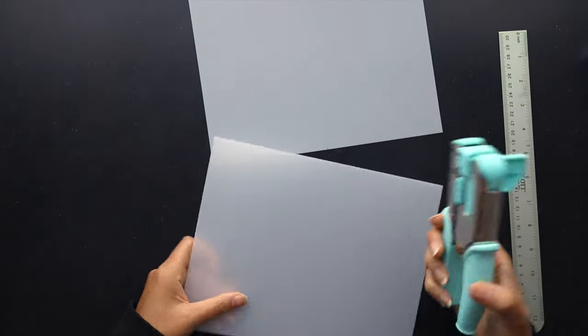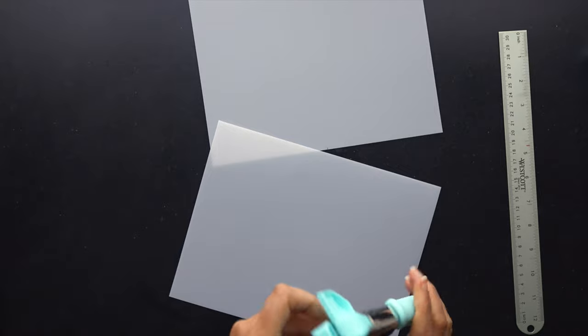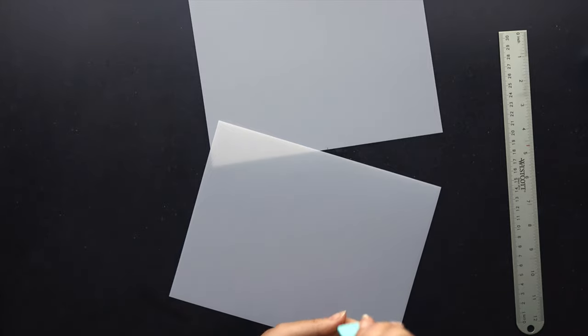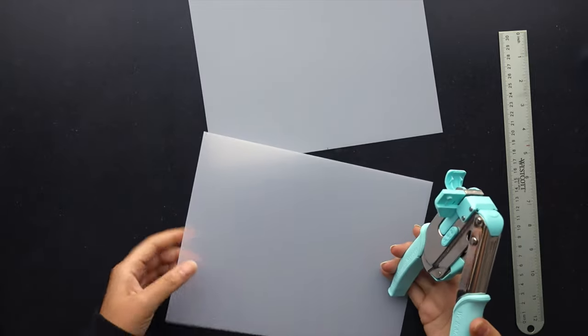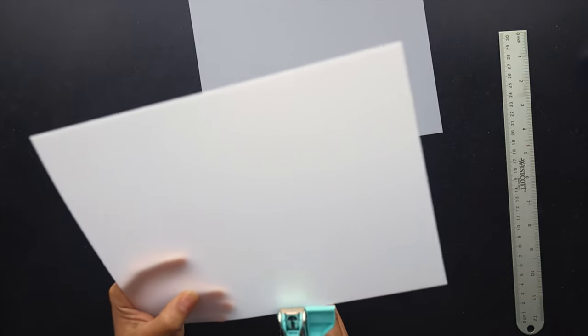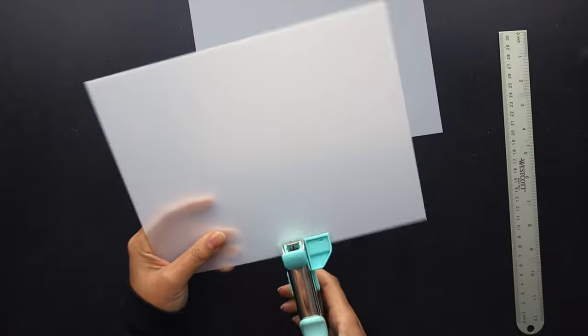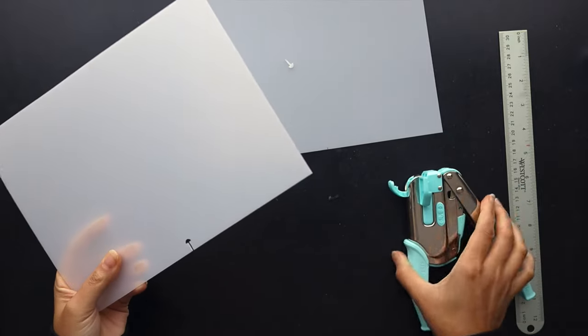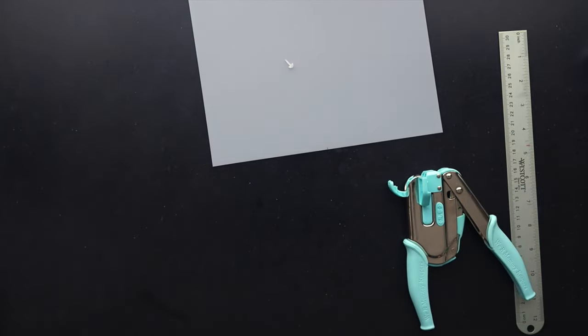I've just marked it there with a sharpie because when I punch it with the We Are Memory Keepers power punch, I'll punch through it so I don't have to worry about it remaining there on the sheet. Starting with the center so that I get even spacing because I've tried to do it from the top and from the bottom, and each time, it gets off a little bit. The center mark is the best way to find even spacing for your hole punching.